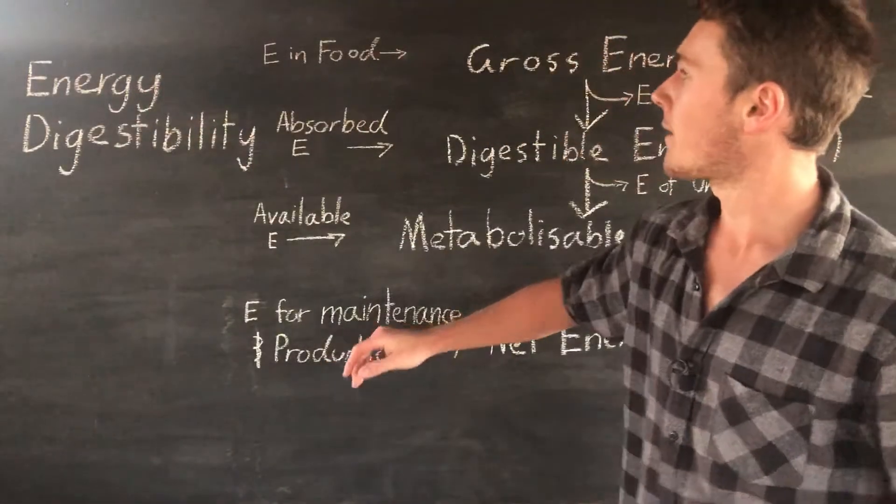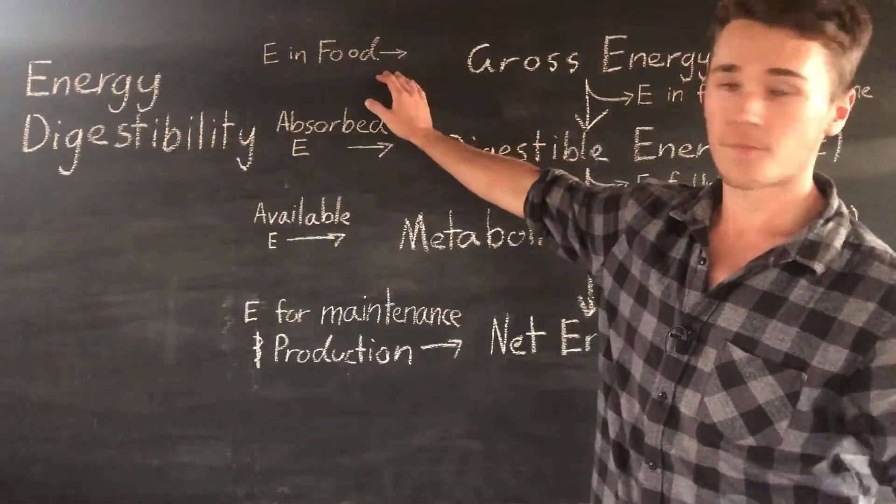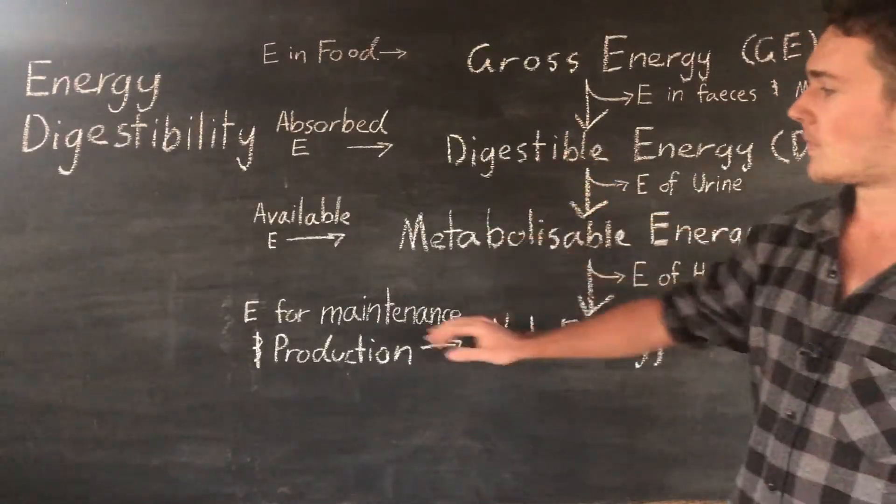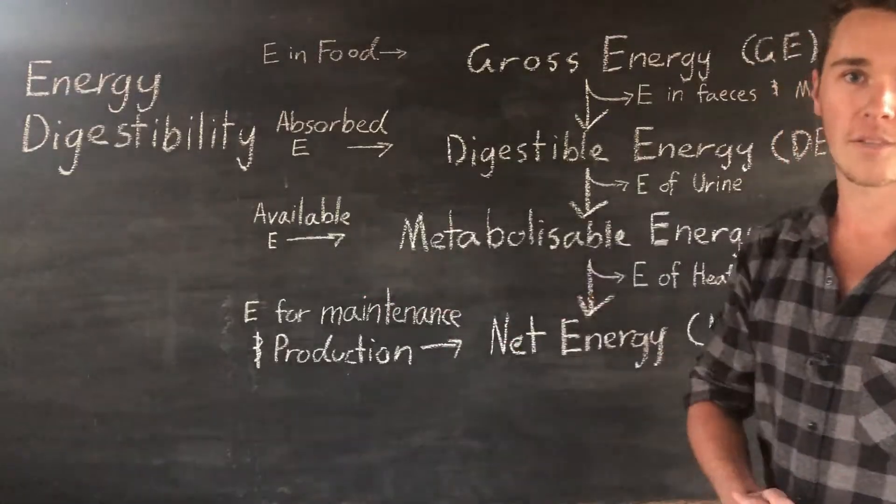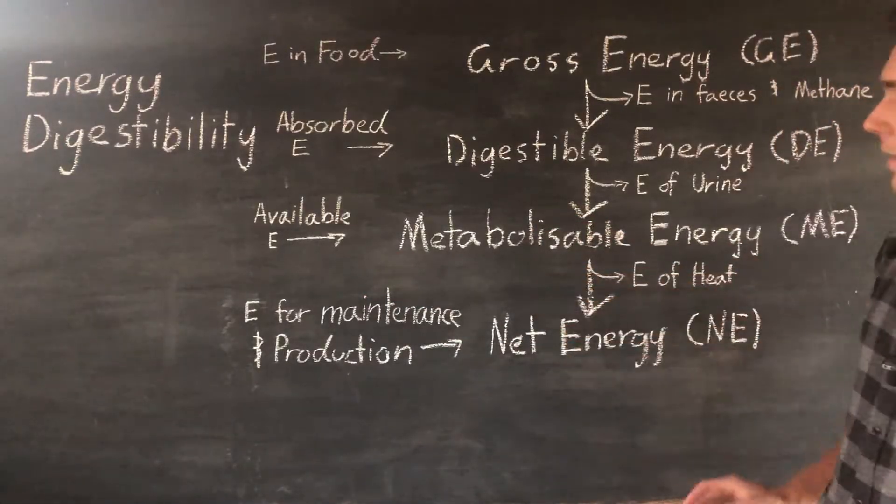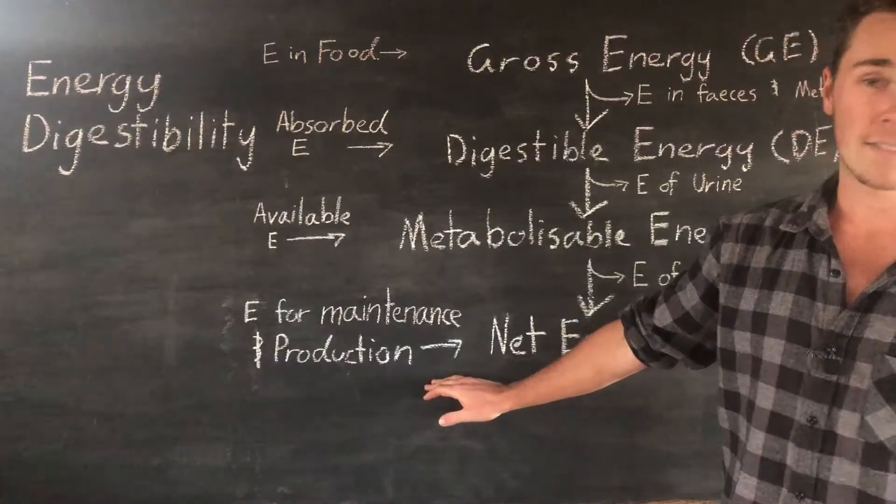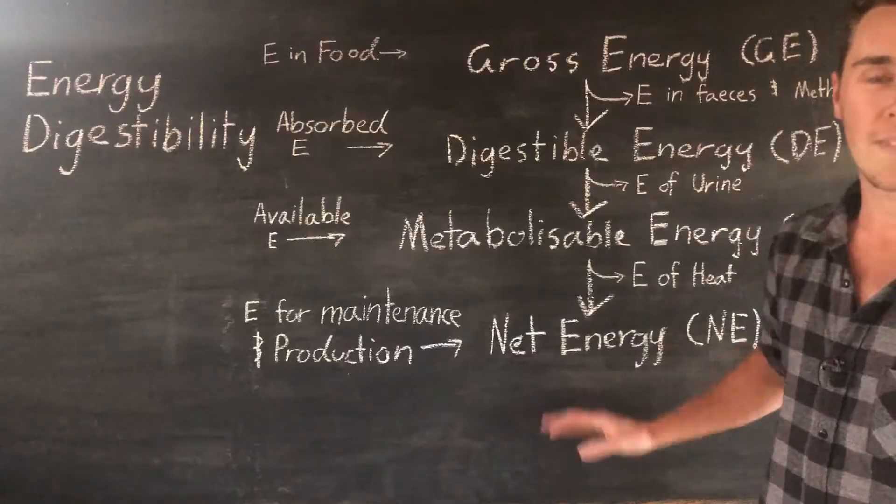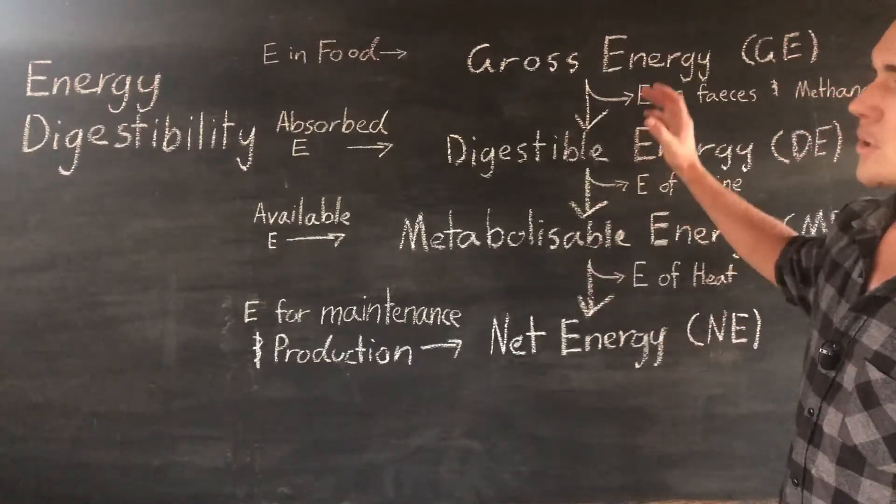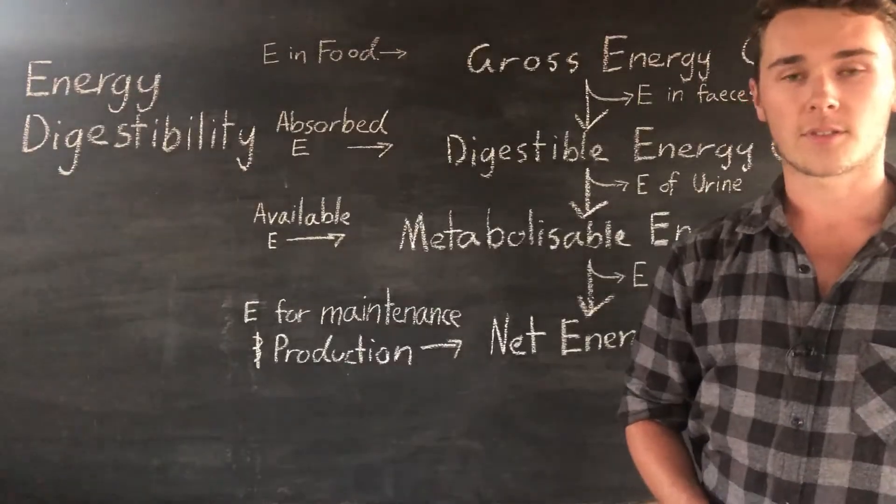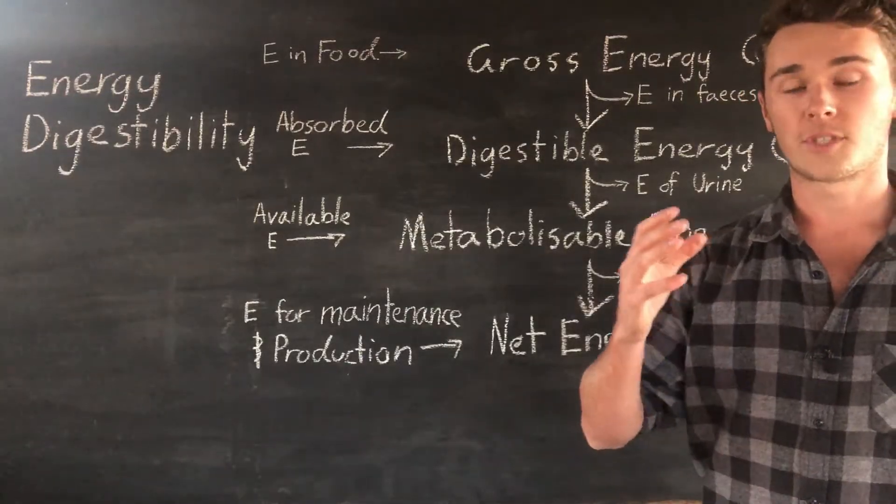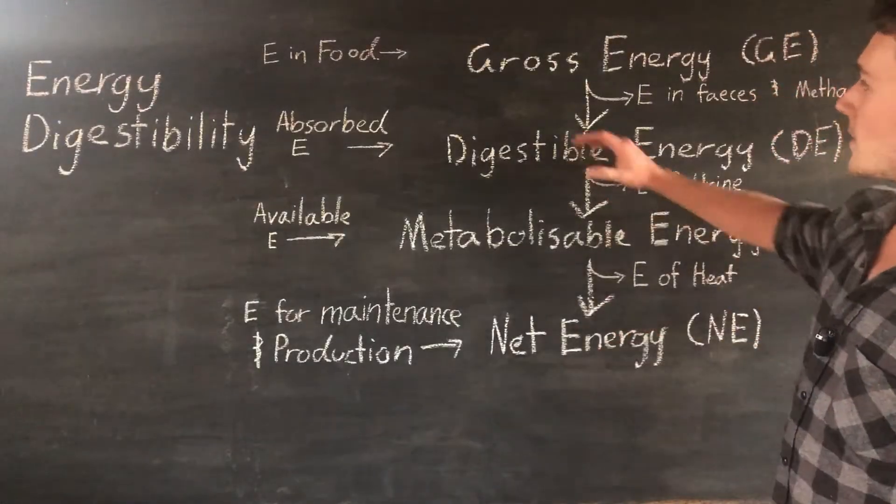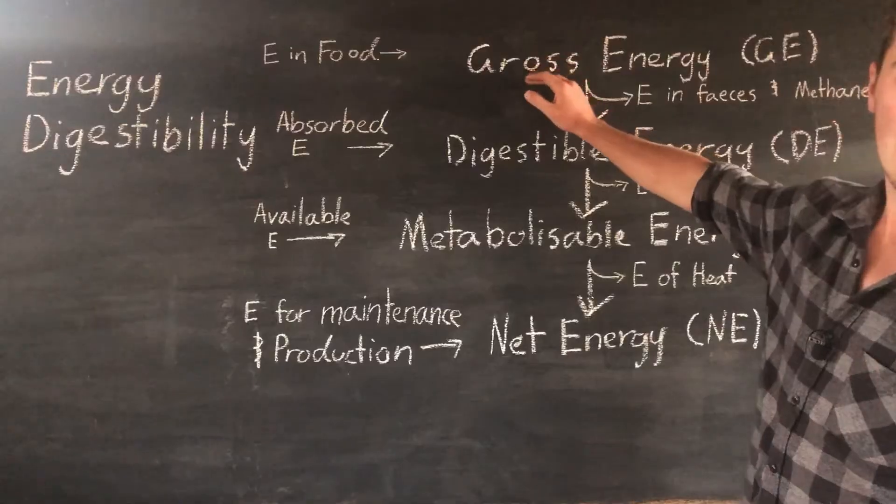So just to recap, we have our energy in the food, this is gross energy. The energy that is absorbed is going to be our digestible energy. The energy available for metabolic reactions is our metabolizable energy. And finally, the energy available for maintenance, production, and growth is our net energy. We want to have as much net energy as we can, and we can do that by improving different characteristics of our animals. Also, genetic potential, that's a massive one that I didn't include before. But we want to do this so that we can increase the conversion rate so we can get as much out of our food, so we're saving costs on our food and increasing as much energy for growth and development.